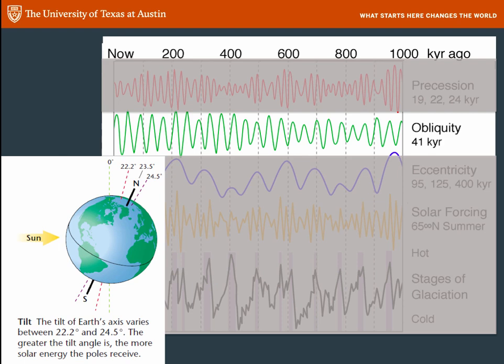The second Milankovitch cycle is tilt. Now, you know that the Earth's axis is tilted, and currently it's tilted at about 23.5 degrees. But did you know that that tilt changes over time? In fact, it does. We call that, officially, obliquity. That angle of tilt changes between about 22.2 and 24.5 degrees, and the cycle is every 41,000 years.